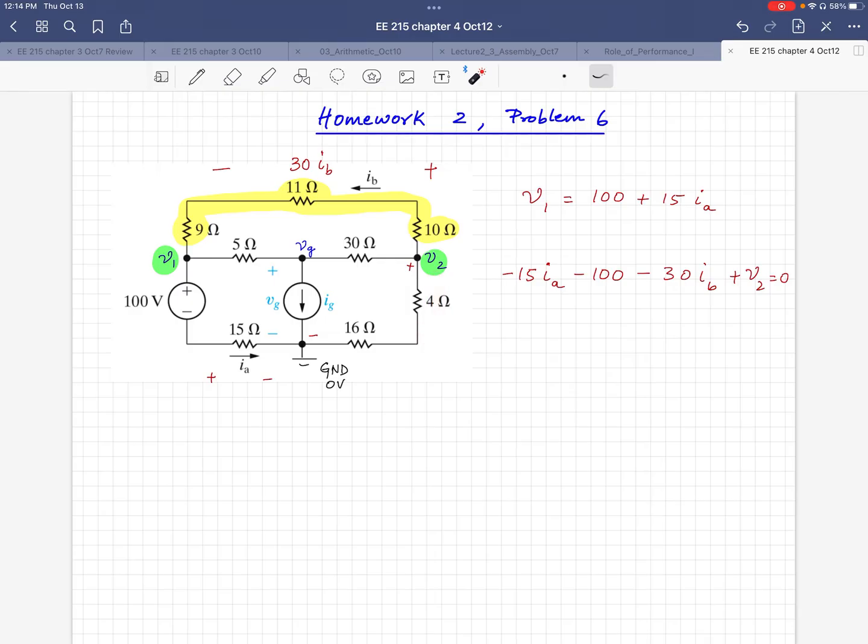Now, the next thing that you could do is you have one current going out of that node, one current going in this way. So using KCL, you could figure out how much current and in what direction is flowing through that 30-ohm resistor. Once you figure that out, you know the current, you know the resistance, so you know the voltage across it. If you know the voltage across it, you know this point already, which means you can find out VG. Because voltage across that point should simply be V2 minus VG.